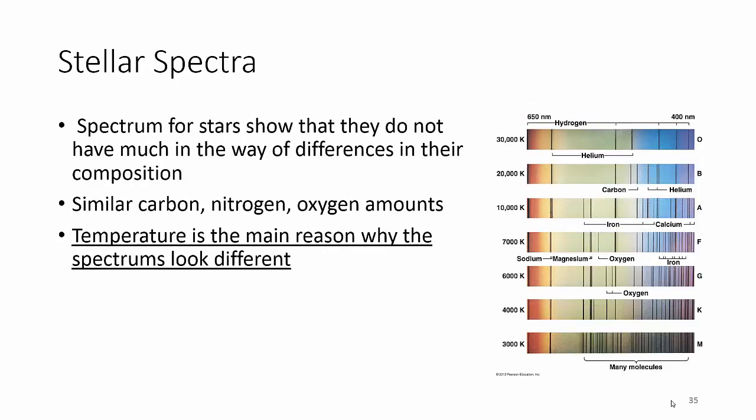It turns out even though these absorption lines differ, all stars are basically hydrogen and helium almost 100% of the time with maybe 1% or so of other. So the reason why the absorption lines look different is because of temperature. The temperature is why you get all these different absorption lines.